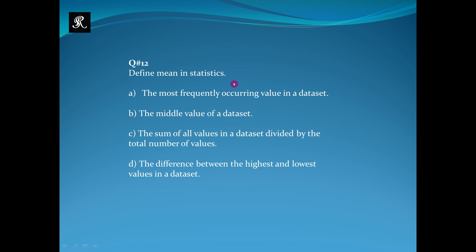Define mean in statistics. The options are: The most frequently occurring value in a data set. The middle value of a data set. The sum of all values in a data set divided by the total number of values. The difference between the highest and lowest value in a data set. The right option is option C: the sum of all values in a data set divided by the total number of values.